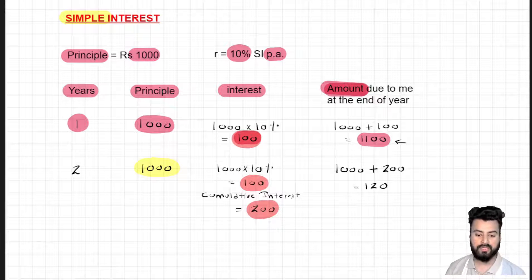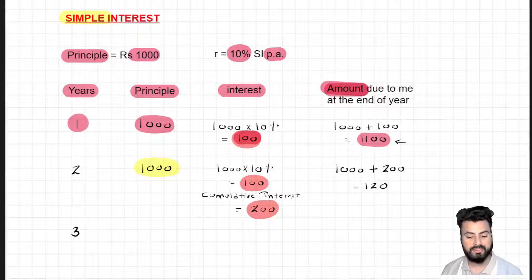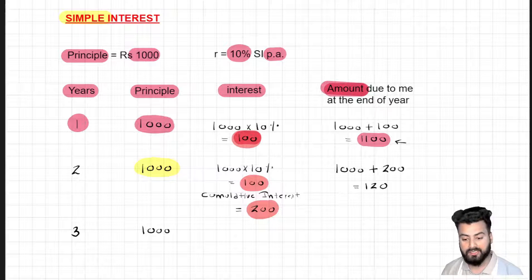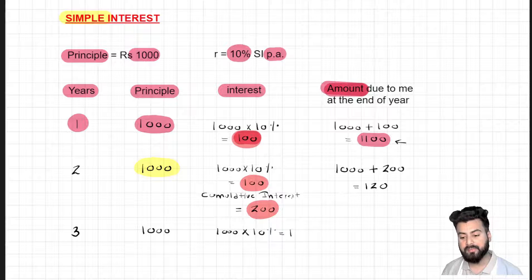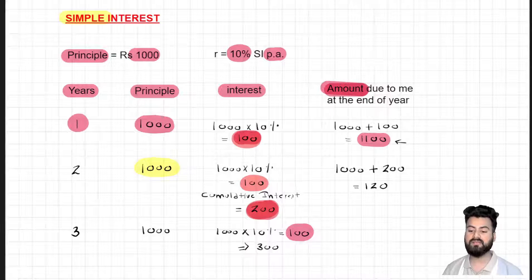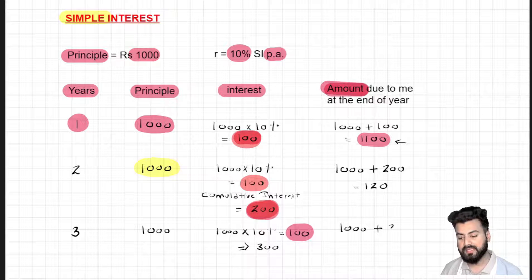Let's do this calculation for one more year — the third year. The principal is again 1000. In simple interest, the value of principal never changes; interest is always calculated on the original principal. So we again calculate 10% of 1000, receiving the same interest of 100 rupees. The cumulative interest is 200 plus 100, that is 300. The amount due at the end of the third year is principal plus cumulative interest: 1000 plus 300, which equals 1300.